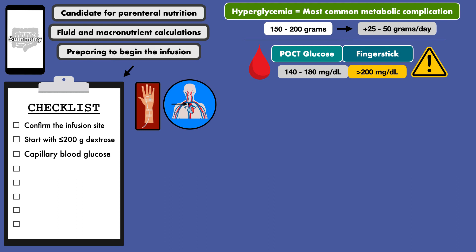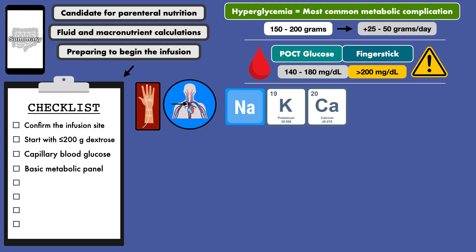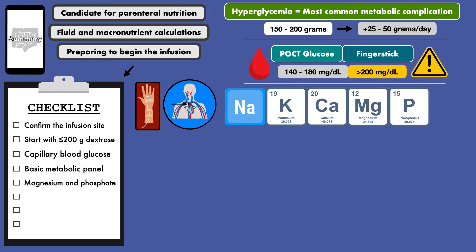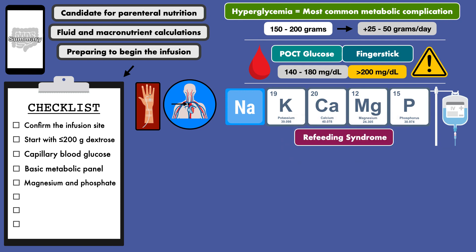Other labs you'll want to check are the basic metabolic panel, or BMP, which contains the electrolytes sodium, potassium, and calcium. You'll also want to check magnesium and phosphate, which are not part of the BMP but are equally important. If any of these are low, you should correct them using IV fluids to minimize risk for refeeding syndrome. The last two laboratory measurements that should be obtained prior to starting parenteral nutrition are liver function tests, or LFTs, and serum triglycerides.